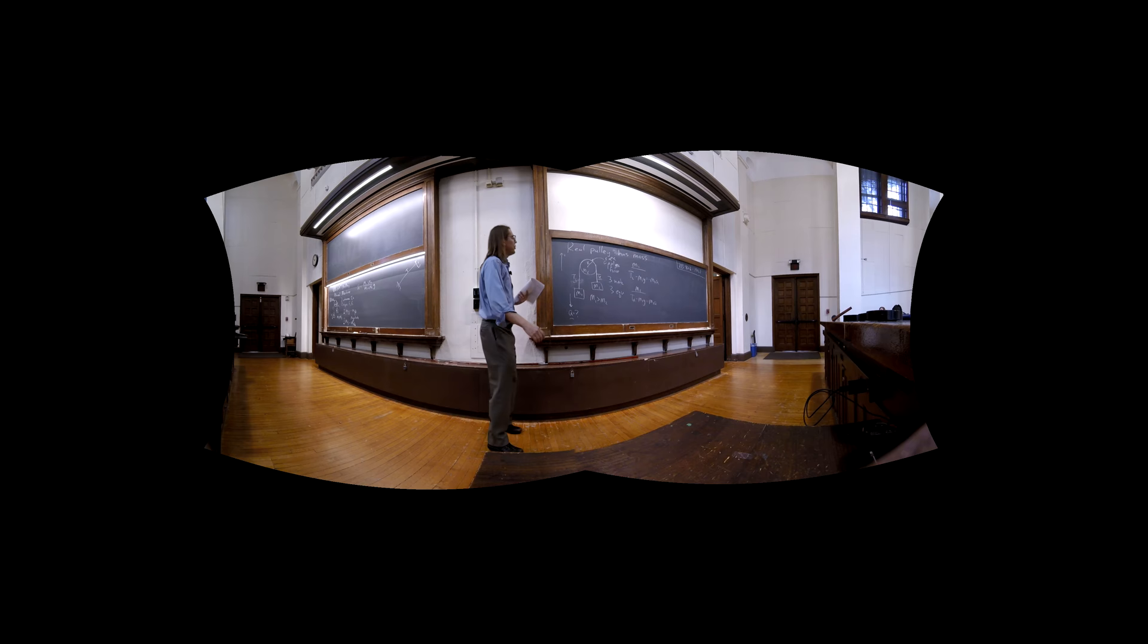That looks almost exactly the same as over here. Except the tensions are different. So we need a third equation. And the third equation is the rotational part. So we've got to think about M3. So we're going to apply Newton's second law just like we were doing here. But we'll write it again since it's new. Sum of the torques equals I alpha. Tau is the torque. I is the moment of inertia. Alpha is the angular acceleration.